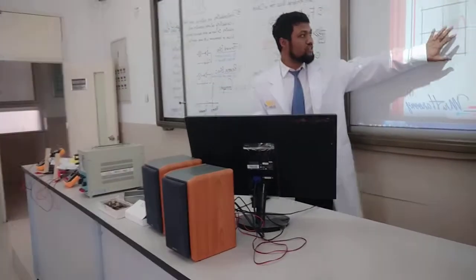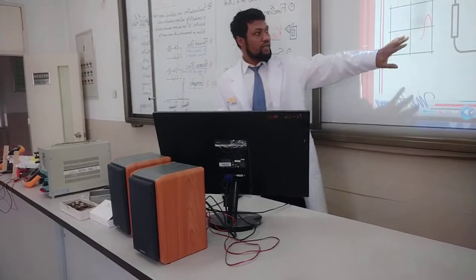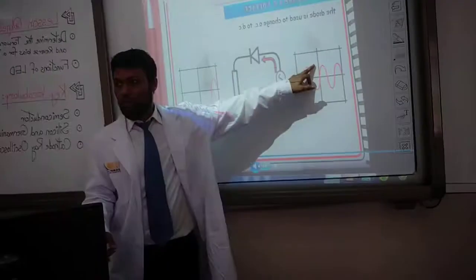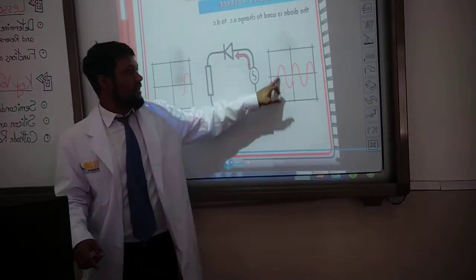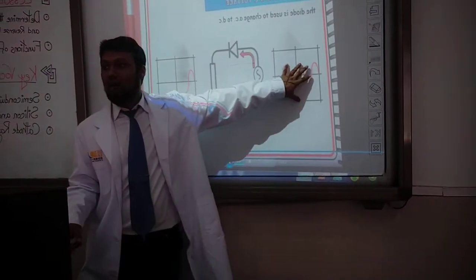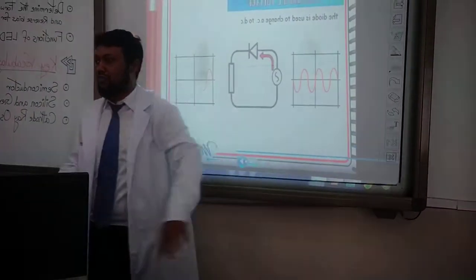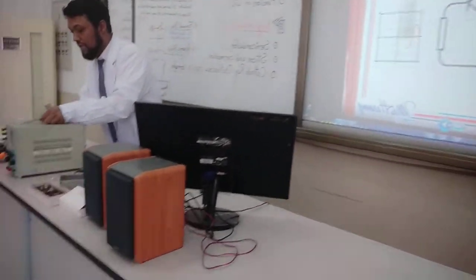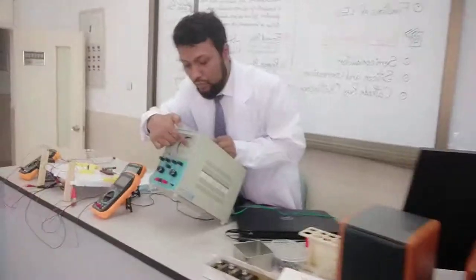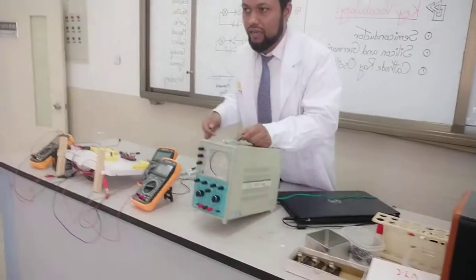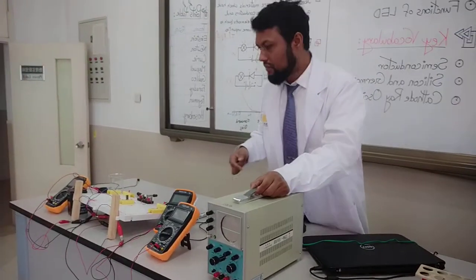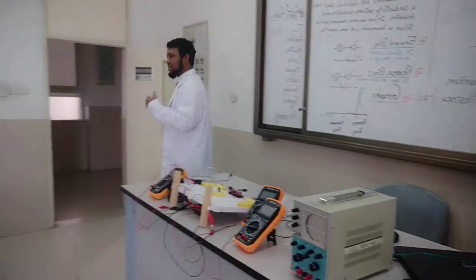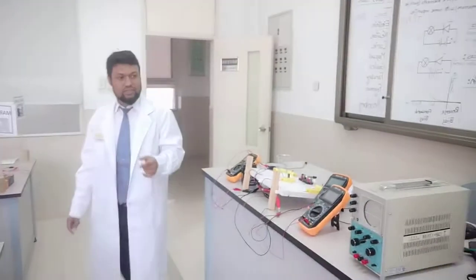Now I will show you how it is changing. You can see here — this is the AC current. And you can see the screen — that's called a CRO, cathode ray oscilloscope screen. This is the cathode ray oscilloscope. You can see over here, you can see the straight line — can you see that, the green color?